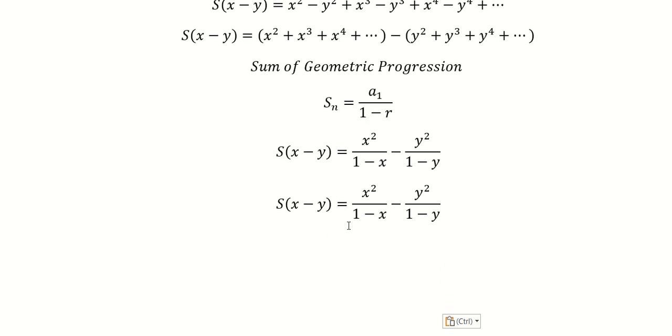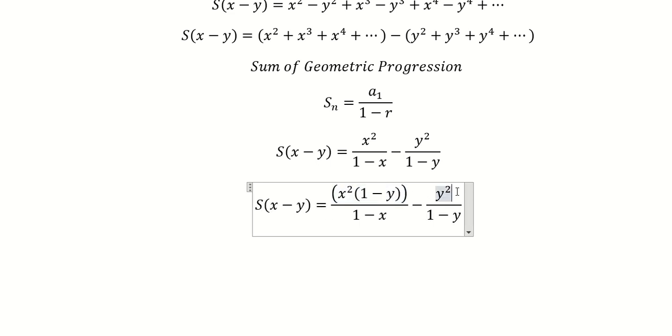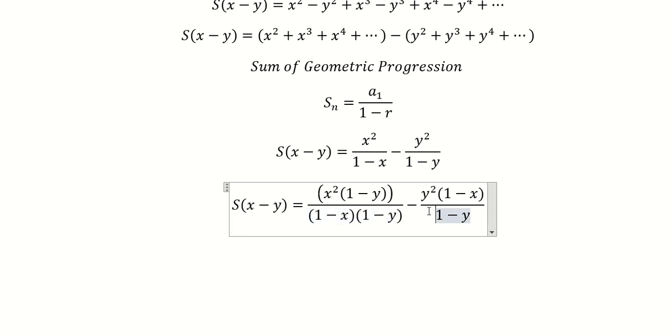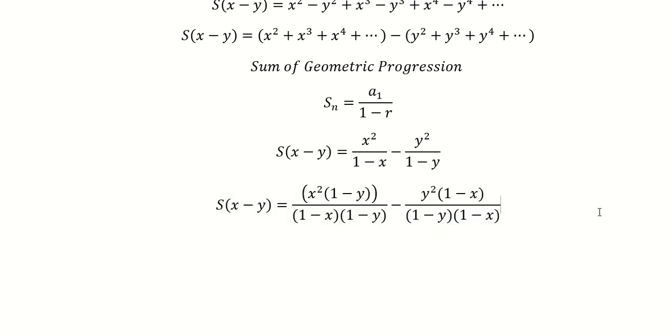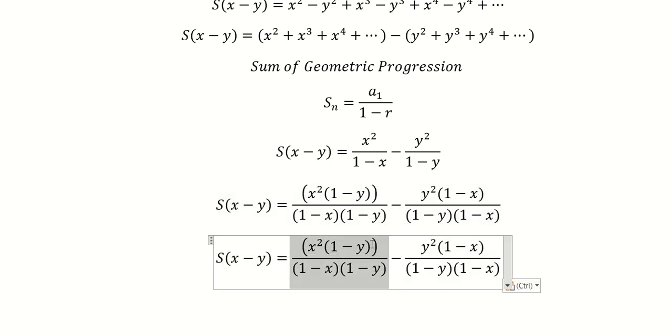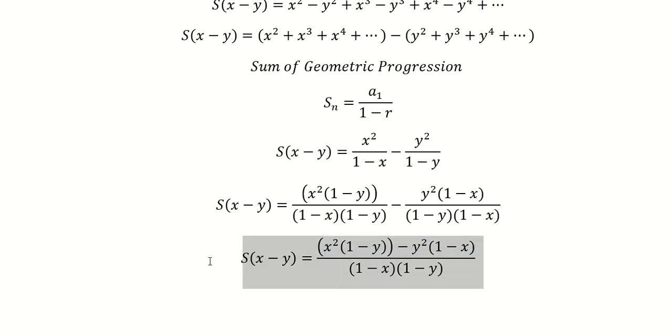Next, we need to do common denominator. So S² will multiply by 1 minus y, and this one by 1 minus x. So we combine two fractions. This one we need to multiply and they should be like this.